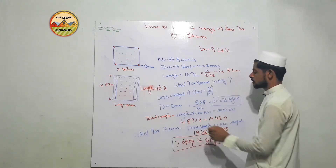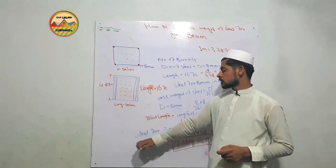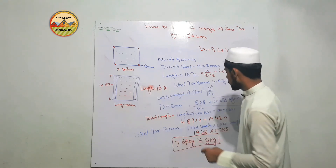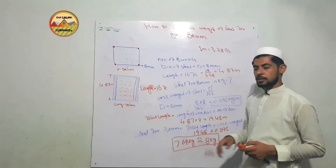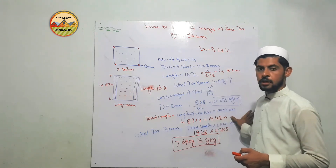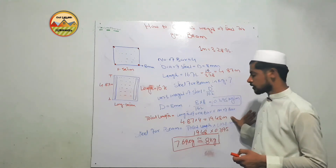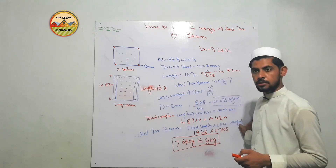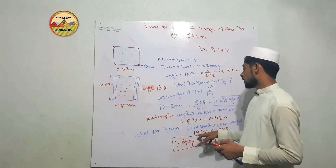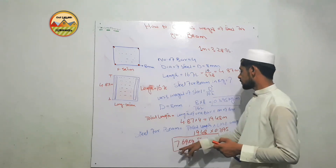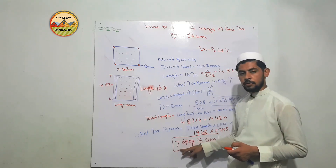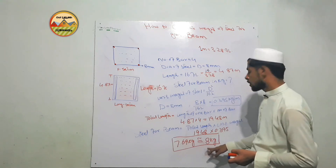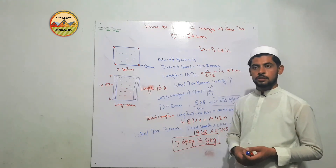Now we can find the weight of steel for the beam in kg. The total length is 19.48 meters and the unit weight of steel is 0.395 kg per meter. Multiplying these gives 7.69 kg, approximately 8 kg. This is our answer.